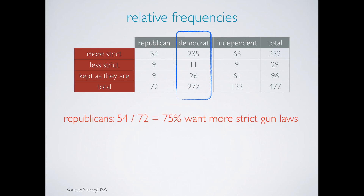Next, there are 272 Democrats, 235 of which want more strict gun laws. So the relative frequency here is roughly 86%.